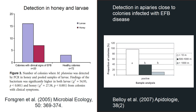There are molecular methods for detecting the bacteria that cause EFB, and researchers have used these methods to find out where the bacteria reside. The graph on the left is from a study by Eva Forsgren and her colleagues, showing that the bacterium was detected in honey from colonies with clinical symptoms of EFB, but also in colonies with no signs of clinical EFB. On the right, a graph from Belloy and colleagues found that the closer honeybee colonies were to a diseased apiary, the more likely it was that EFB was detectable in that colony.